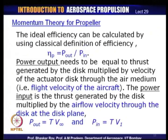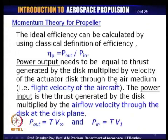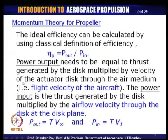The efficiency is normally defined as power output divided by power input. In our case, the power output of a propeller would be the thrust work done — thrust being the final output the propeller creates — and the input is the power coming from the engine. In our momentum theory, the power input is the thrust force generated by the disc multiplied by the air velocity through the disc at the disc plane, whereas the power output is thrust multiplied by the flight velocity of the aircraft.